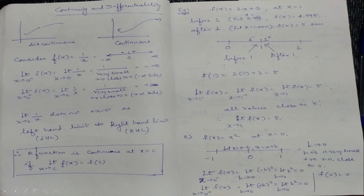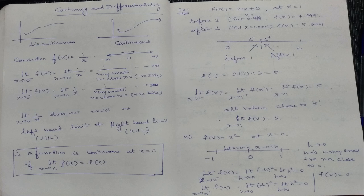Similarly, the limit as x tends to 0 plus of f(x) equals the limit of 1/x as x→0⁺. That is 1 divided by a very small positive number — for example, 1 divided by 0.00001 — which gives a huge positive number, i.e., plus infinity. So the left-hand limit is not equal to the right-hand limit, and therefore the limit at this point does not exist. The left-hand limit is minus infinity and the right-hand limit is plus infinity.